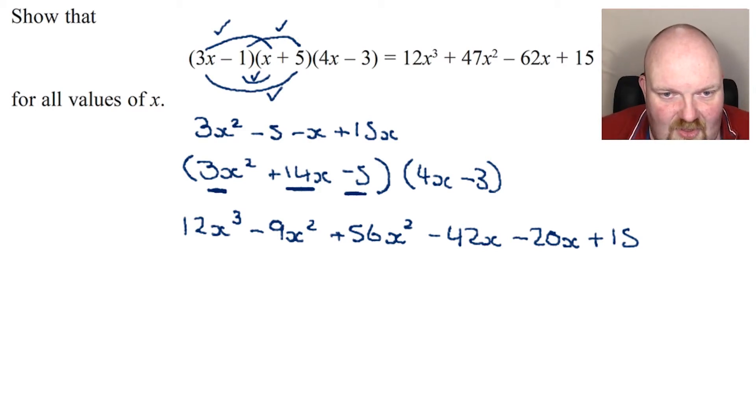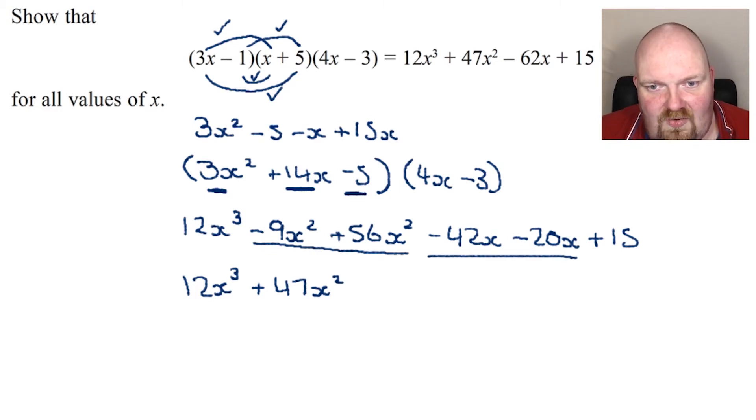What I now need to do is start to simplify this. Let's start with the easiest of all, which we've only got one of. So it's 12x cubed. Now let's sort out the x squared. Negative 9 add 56 is 47. So I've got 47x squared. Then I've got negative 42 take away 20 gives me negative 62x.